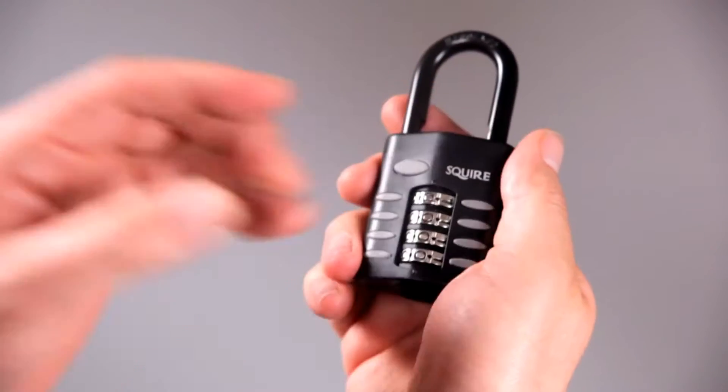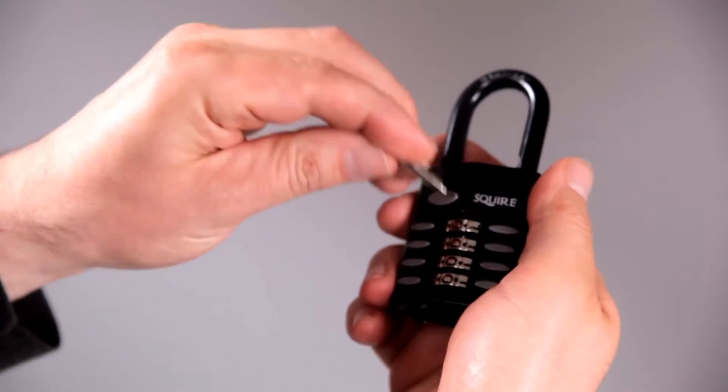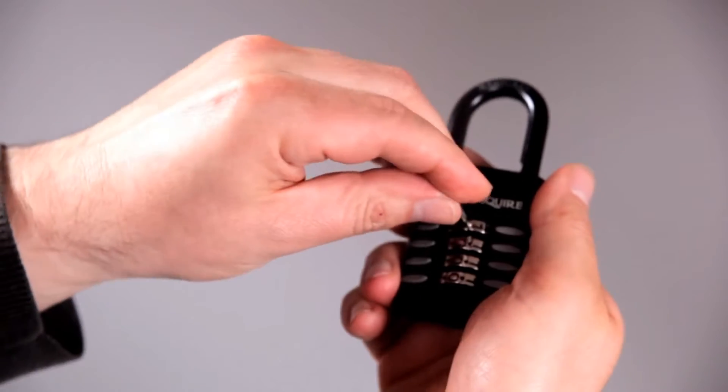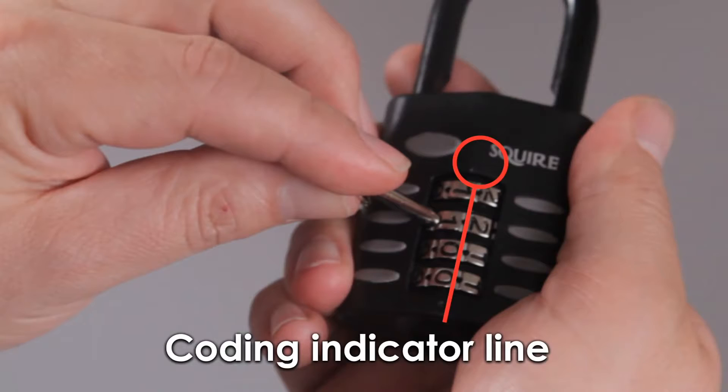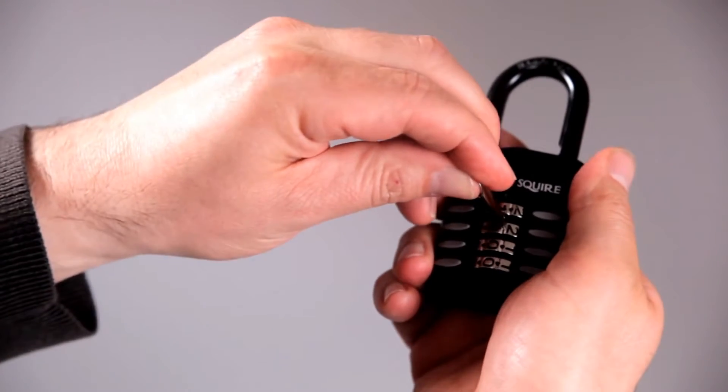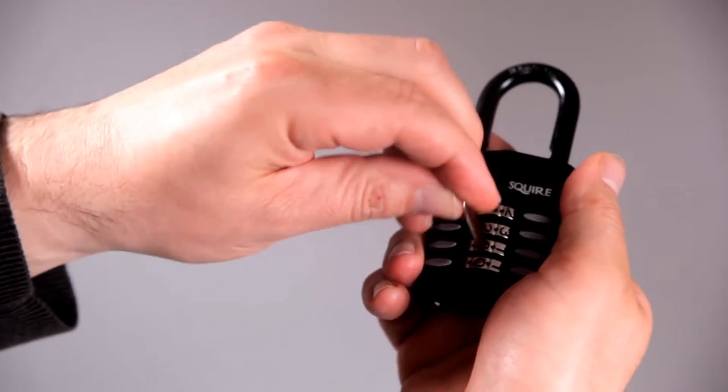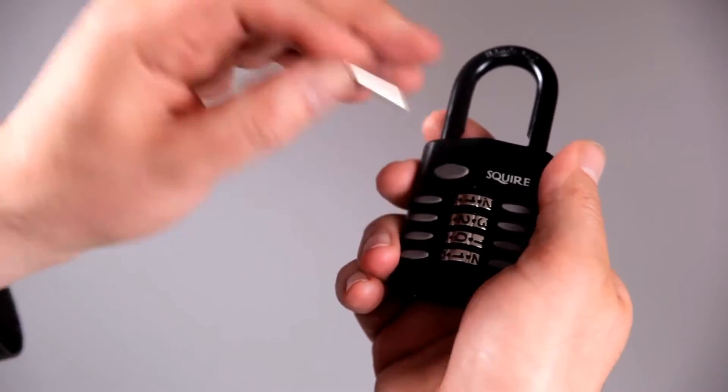You simply open the lock, place the recode tool into the numbers that you want, then turn the wheel back until your number lines up with the code indicator. You then repeat using the other wheels. Finally, just close the shackle and test the code by pressing the push button.